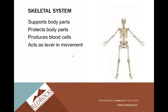The skeletal system supports the body — it's what gives us the structure of our body. It protects body parts and produces blood cells. In the bone marrow, your red blood cells, white blood cells, and platelets are produced — a really important function. It also acts as a lever in movement. You'll often hear 'musculoskeletal' because they're so interdependent — the muscle contracts and that's what helps lift the skeletal system for movement.